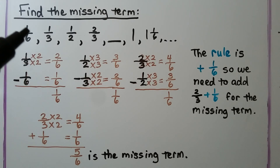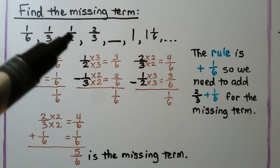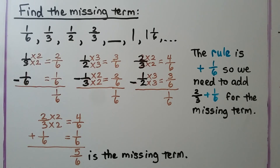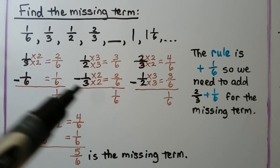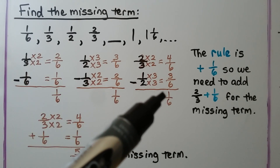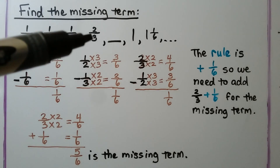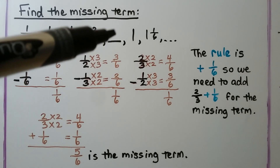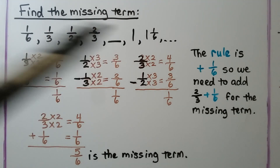We needed to subtract the first term from the second term, then the second term from the third, and the third from the fourth — keep subtracting to find the difference between them. And once we found that difference, we added it to the term to get the next term because they're all increasing.